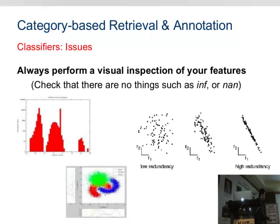If you plot your two features and you have three categories — green, blue, and red — and you see clustered groups, you can guess that a Gaussian distribution would work well. Maybe one Gaussian for the greens, two for the reds, and two or three for the blues. You wouldn't need a Support Vector Machine or a more complicated algorithm if you can already see this from the feature distribution.